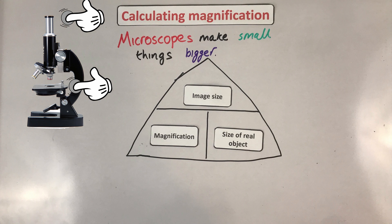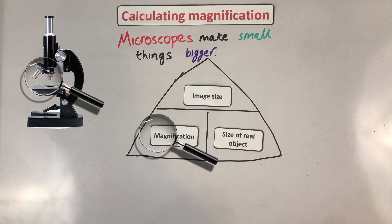So to remember what goes where, you place your real object on the bottom. You view your larger image size on the top. And so to get from here to here, you need to magnify at the bottom here.